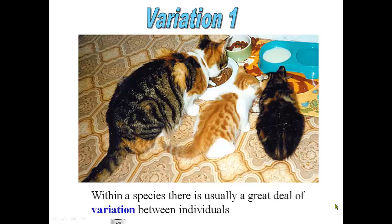Today we're going to talk about variations in species. Within a species there is usually a great deal of variation between individuals. For instance, within this feline species there are different variations between the cats. This cat is black and gray and orange and white, this cat is just orange and white, and this cat is just black and orange. There are differences in their traits or characteristics.